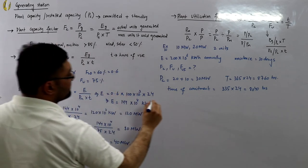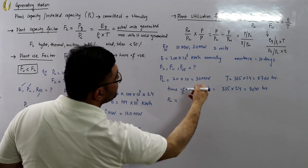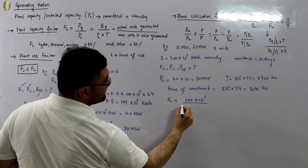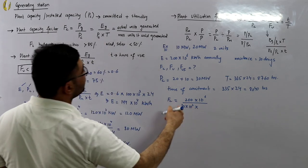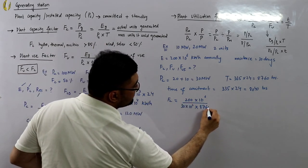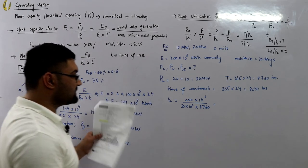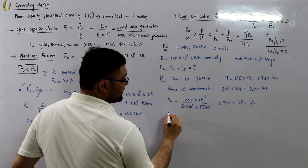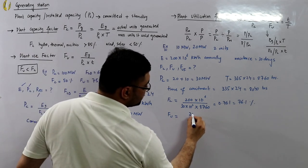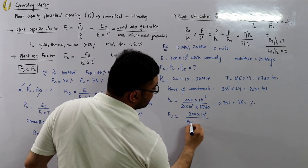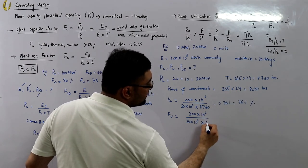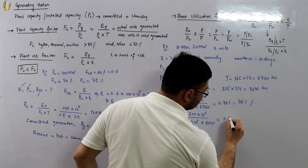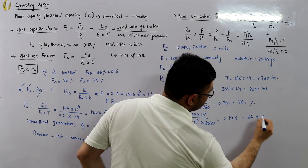The plant capacity factor FC equals EG divided by PC times capital T: 200 × 10⁶ divided by (30 × 10³ × 8,760), which equals 0.761 or 76.1%. The plant use factor FU equals 200 × 10⁶ divided by (30 × 10³ × 8,040), which equals 0.829 or 82.9%.